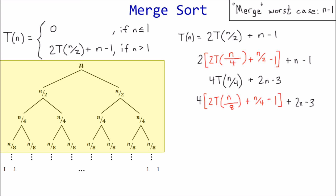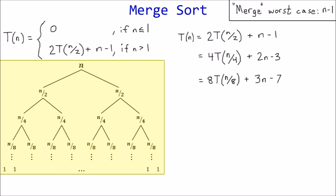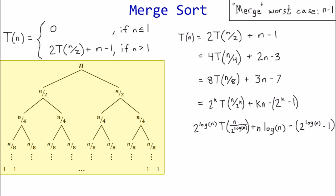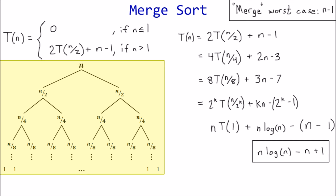Repeating for the next level gives 4·(2·T(n/8) + n/4 − 1) + 2n − 3, simplified to 8·T(n/8) + 3n − 7. We can see a pattern emerging. Since k equals log n, we plug that in: 2^(log n) equals n, so T(1) = 0. The n·log n term and the remaining terms simplify to: worst case is n·log n − n + 1.